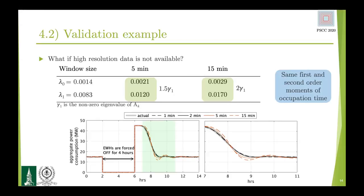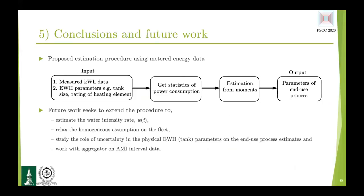That indicates the first-order and second-order moments corresponding to the estimated parameters are the same. We can potentially take care of the transient difference by introducing cross-correlation statistics, and this is something we are looking at right now. To conclude, in our estimation procedure we take as input the AMI data along with some fleet information, compute statistics of the total busy time, feed it to our estimation algorithm, and get as output the end-use parameters. Going forward, we are interested in estimating the water intensity rates themselves. We are also looking to relax the homogeneity assumption — considering what happens if there is uncertainty around the thermal time constants. Finally, the last step is to validate this algorithm with real AMI data.